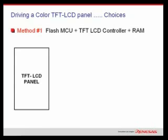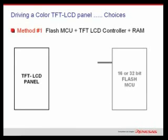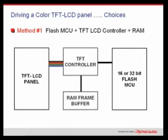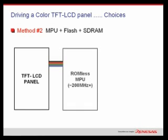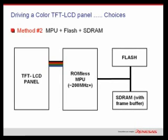Now let's consider three ways to drive a TFT LCD panel. The first way is to use a flash MCU connected to an external TFT controller chip. These TFT controllers make use of either an internal or external frame buffer to store the image — either way, this is a very expensive solution. The second way is to use a ROM-less microprocessor. These MPUs that can drive a TFT panel typically run at 200 MHz or higher, executing code from internal cache memory loaded from external SDRAM, which is typically loaded from external flash. So for light to moderate graphic animation, this solution is overkill and has a higher total system cost than a smaller MCU system.